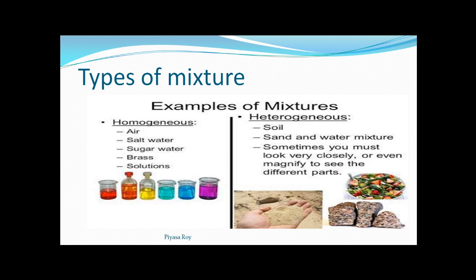More examples of heterogeneous mixtures: a salad — all the vegetables are mixed non-uniformly, so you get more reddish-colored veggies in one part. These are not uniformly distributed, so a salad can be considered a heterogeneous mixture.